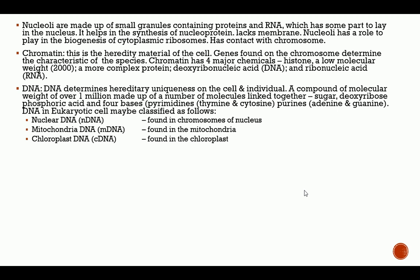DNA is a compound of molecular weight over 1 million, made up of a number of molecules linked together: the sugar deoxyribose, phosphoric acid, and four bases — the pyrimidines, made up of thymine and cytosine, and the purines, adenine and guanine. In eukaryotic cells, DNA may be classified as nuclear DNA found in the nucleus, mitochondrial DNA found in mitochondria, and chloroplast DNA found in the chloroplast.